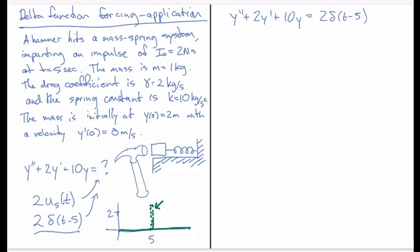So we get s squared times y minus s times y of 0, which is 2, minus y prime of 0, which is 0, plus 2 times sy minus 2 times y of 0, which is 2. So this is going to be minus 4, because we get this 2 multiplying both the sy and the y0. And then finally we have a plus 10 times y, and that's going to be equal to 2 times the Laplace transform of the delta function evaluated at 5, which is e to the minus 5s.